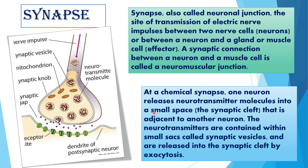What is the structure of a synapse? At a chemical synapse, one neuron releases neurotransmitter molecules into a small space called the synaptic cleft that is adjacent to another neuron. The neurotransmitters are contained within small sacs called synaptic vesicles and are released into the synaptic cleft by exocytosis. Under the electron microscope, the terminal branches of the axon of the pre-synaptic part end in expanded regions called synaptic knobs, which are covered by the pre-synaptic membrane and contain mitochondria and large numbers of synaptic vesicles filled with neurotransmitter substance.